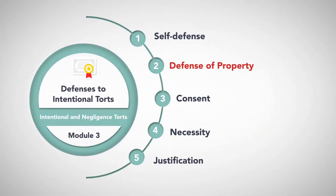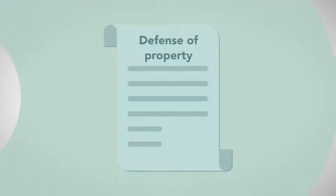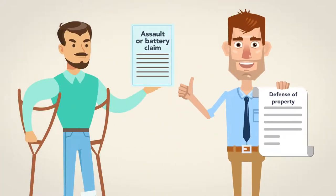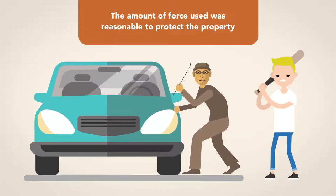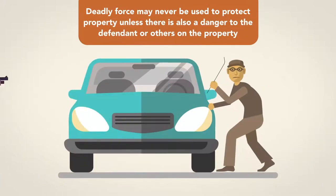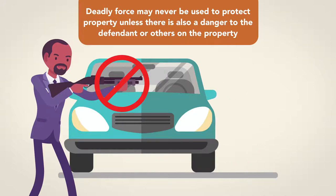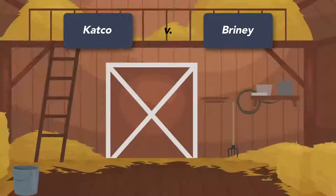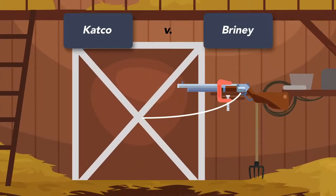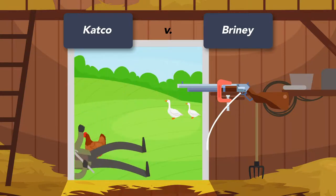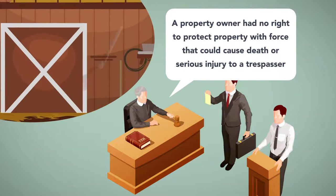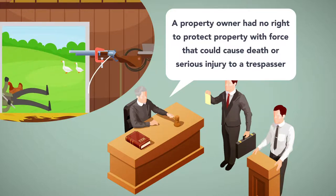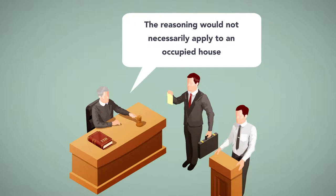Defense of property is another defense that may be asserted against an intentional tort claim of assault or battery. To be successful, the defendant must show that the force was used against a wrongdoer—generally a thief—and that the amount of force used was reasonable to protect the property. Deadly force may never be used to protect property unless there is also a danger to the defendant or others on the property. In Catco v. Briney, the defendant set up a spring shotgun in an uninhabited farmhouse that had been burglarized. Catco attempted to break in and was shot and injured. The jury found for the plaintiff, awarding actual and punitive damages. Affirming the trial court's decision, the court ruled that a property owner had no right to protect property with force that could cause death or serious injury to a trespasser. That case turned on the fact that the farmhouse was empty, and the court noted that the reasoning would not necessarily apply to an occupied house.